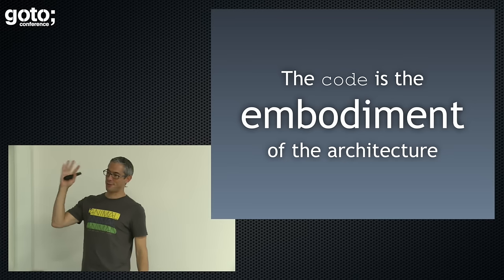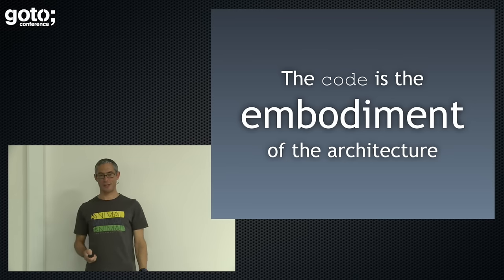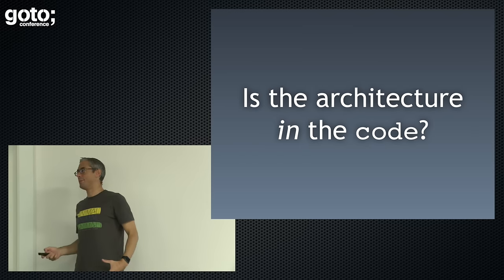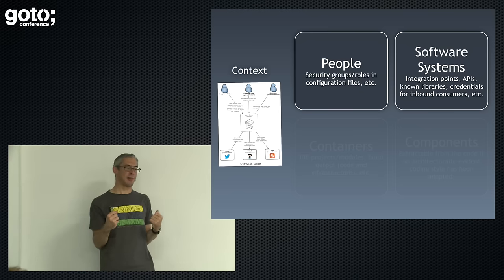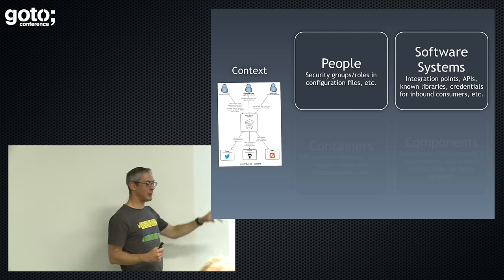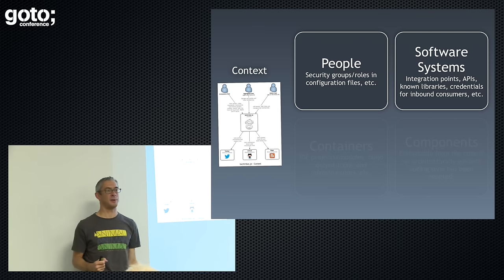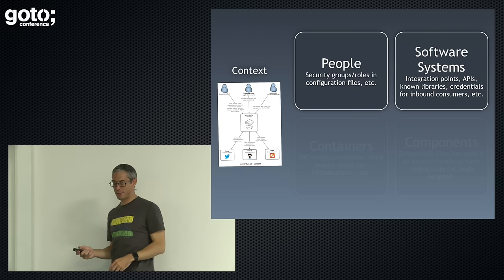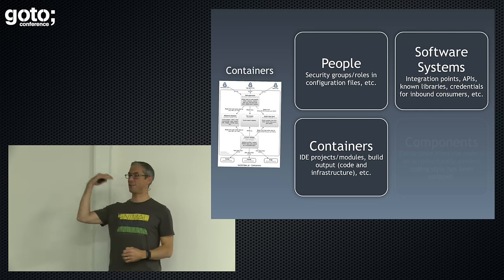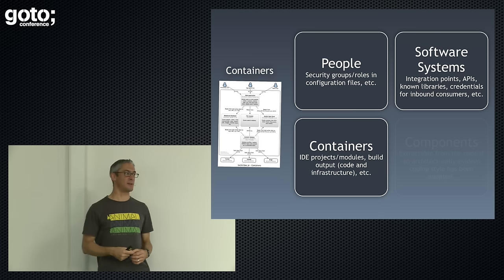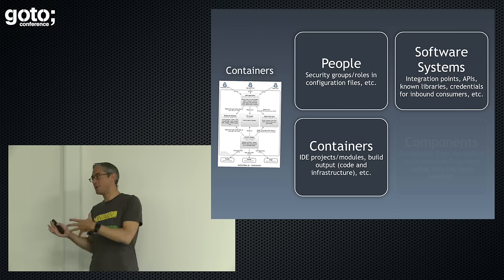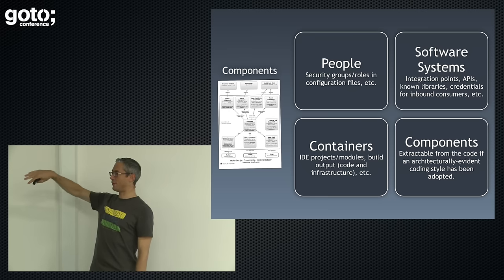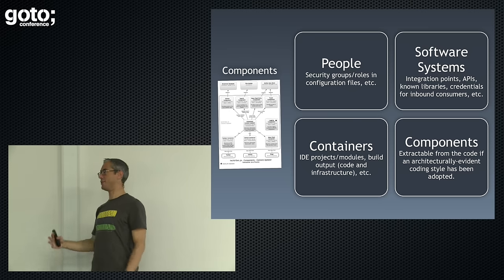We often say the code is the single point of truth — the final embodiment of all the architectural ideas. Can we get that information back out of an existing code base? The answer is not really. Could I generate a context diagram automatically by looking for references to people and software systems in your code base? No — they don't really exist. We don't have this information in our code bases much of the time. The same with containers. When I get down to the component level, this is really the level I want to generate automatically because it's the most volatile and changes most frequently.